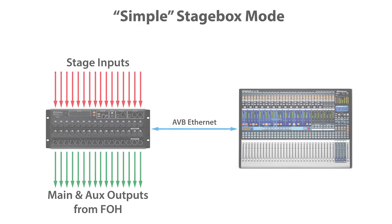The first is simple stage box mode. In this mode, the RM mixer acts as a simple stage box, providing inputs to the AI console mixer at front of house and outputting the main mix and aux mixes from the front of house mixer to the RM mixer's main and mix outputs. The RM mixer's DSP is bypassed and it functions as a traditional digital snake.